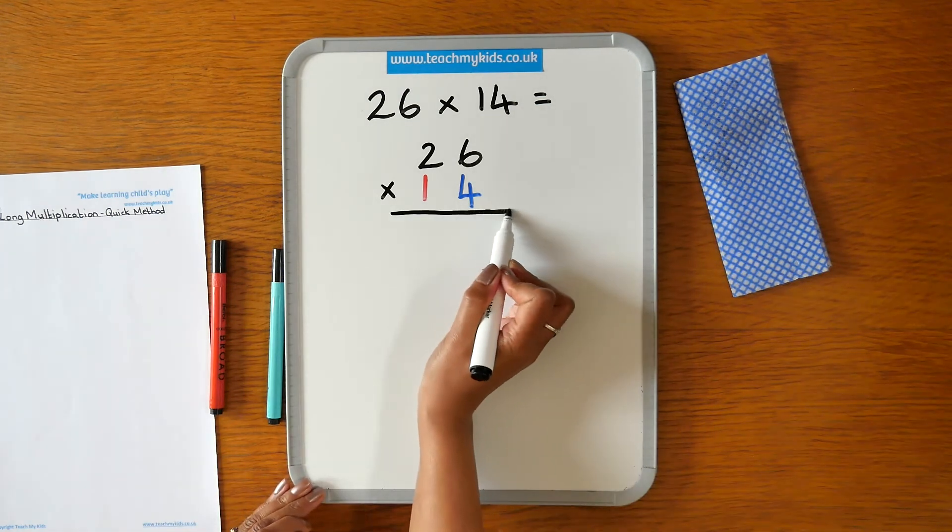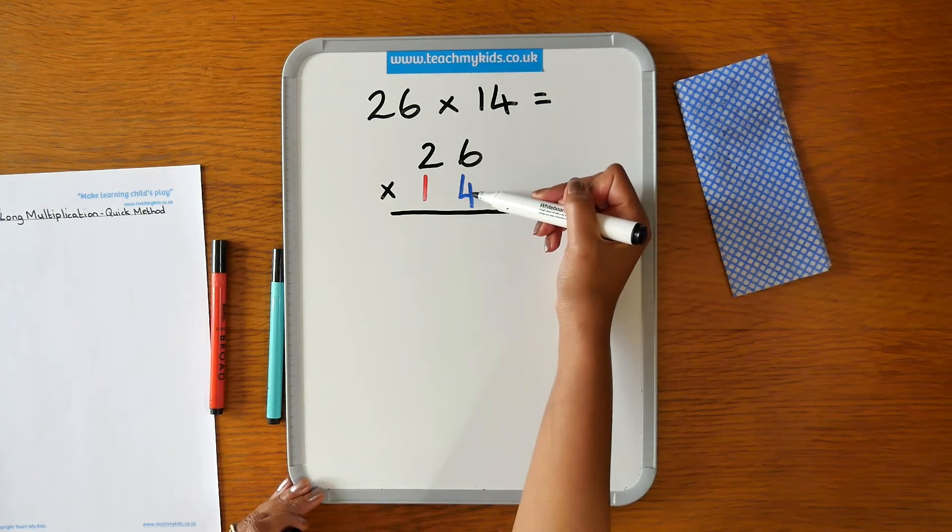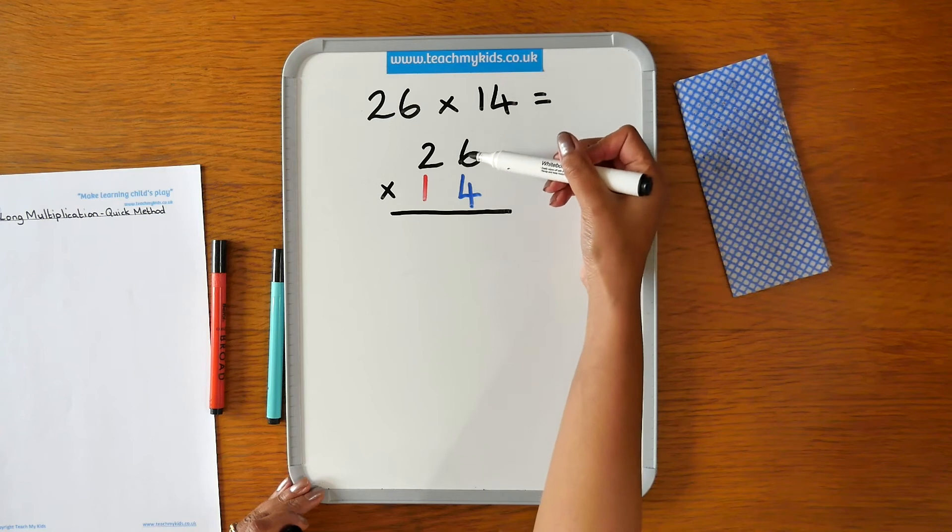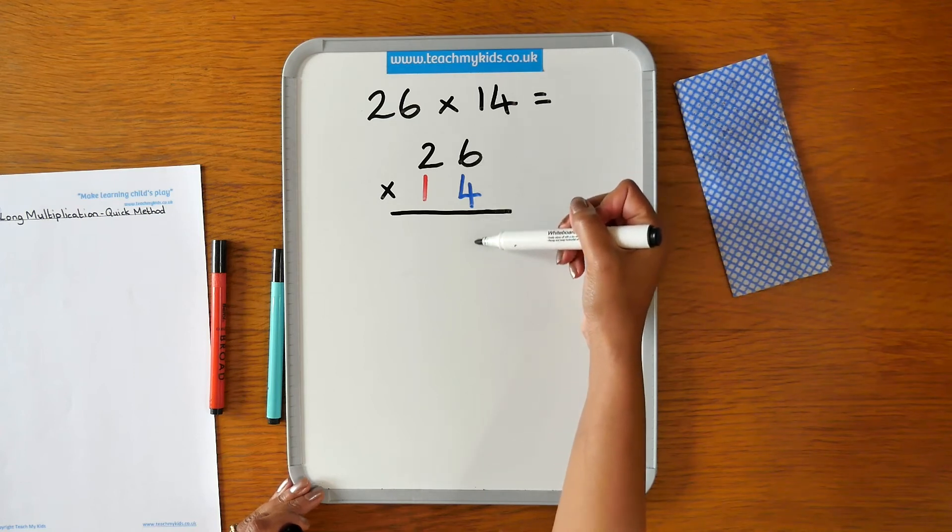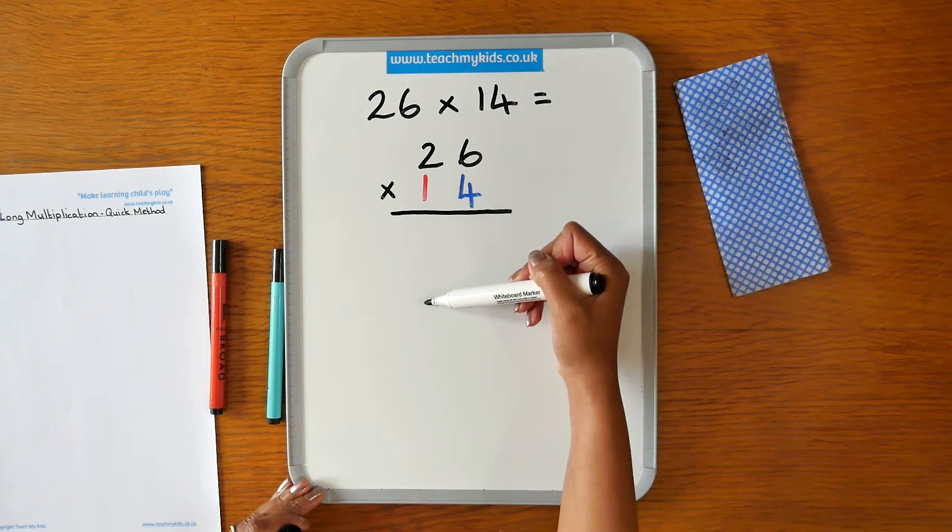Okay, so if you look at the numbers, we've got the 6 and the 4 in the units column, and we've got the 2 and the 1 in the tens column. It's a good idea to keep your numbers tidily in their place value order so that you can see where numbers are coming from.